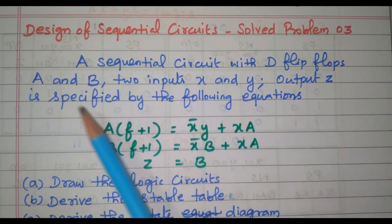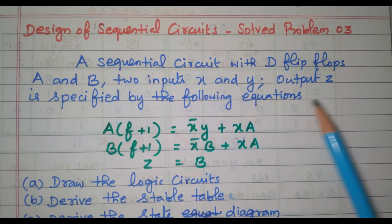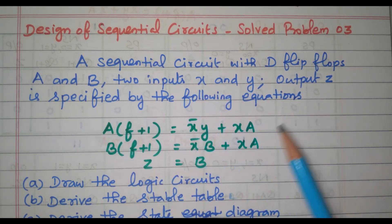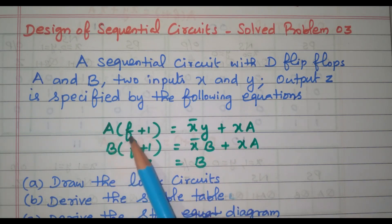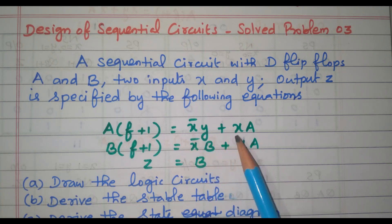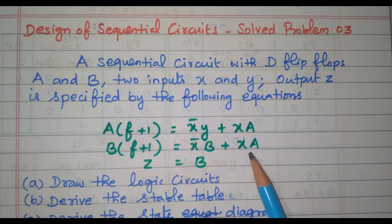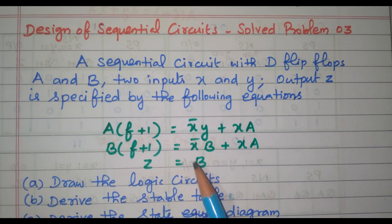There are two flip-flops A and B, input is X and Y, output is Z that is specified by this equation. A(t+1), that means next state, equal to X-bar·Y plus X·A. B(t+1) equal to X-bar·B plus X·A. Then output Z equal to B.